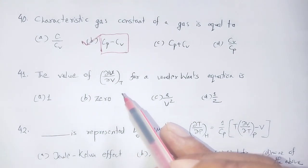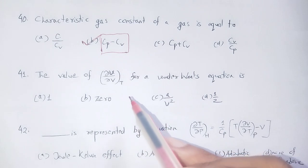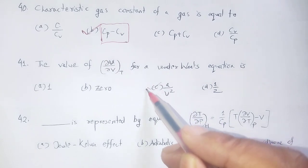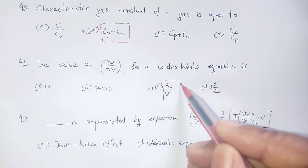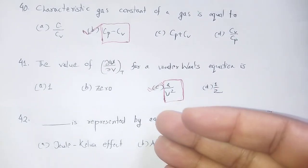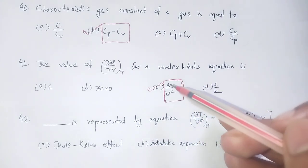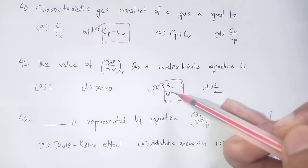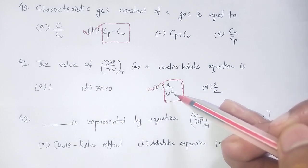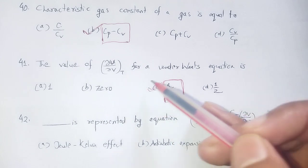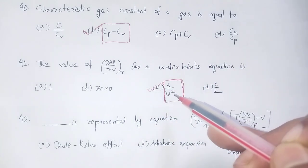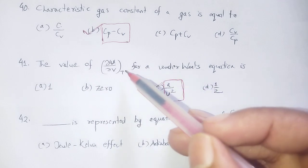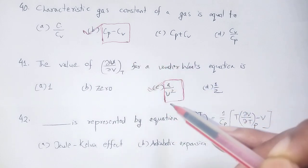The value of del U by del V at constant temperature for a Van der Waals equation: in the Van der Waals equation, a/V² is the pressure correction term and b is the volume correction term. The value of del U/del V at constant temperature is a divided by V squared, which is the pressure correction term.